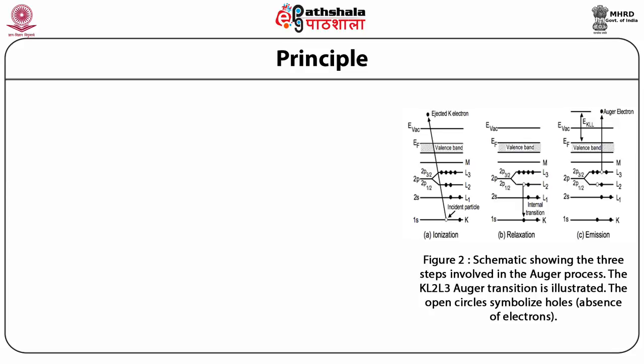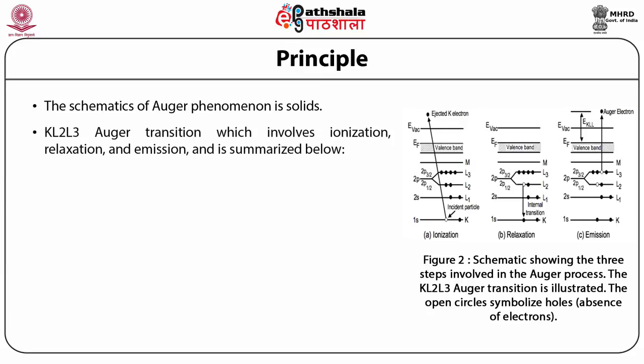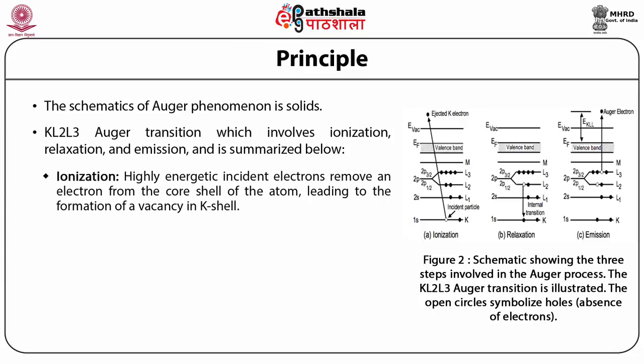Figure 2 depicts the schematic of the Auger phenomenon in solids. The figure shows K, L2, L3 Auger transitions which involve ionization, relaxation, and emission, summarized as follows. Ionization: high-energetic incident beam electrons remove an electron from the core shell of an atom, leading to the formation of a vacancy in the K shell, thus producing an electronically excited ion.